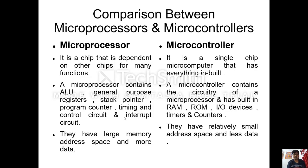We will now see the comparison between microprocessor and microcontroller. Microprocessor is a chip that is dependent on other chips for many functions. Microcontroller is a single chip microcomputer that has everything built-in. A microprocessor contains ALU, general purpose registers, stack pointer, program counter, and timing and control circuit with interrupt circuit. A microcontroller contains all the circuitry of a microprocessor and has built-in RAM, ROM, input-output devices, timers and counters. Microprocessors have a large memory address space and more data, whereas microcontrollers have a relatively small address space and less data.